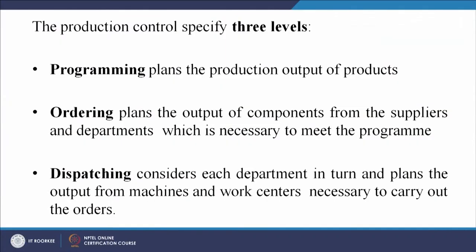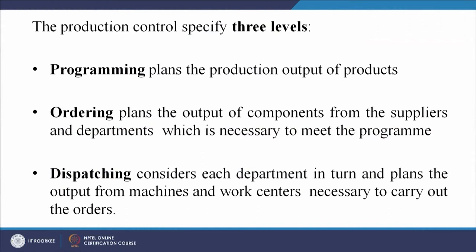Production control specifies three levels. First is programming — it plans the production output of products, telling us how many products have to be produced in a given time. Second is ordering — it plans the output of components from suppliers and departments which is necessary to meet the program. We already know the number of products, how they have to be produced, and when they have to be delivered. To satisfy that demand we need raw materials, parts, equipment, and sub-assemblies.